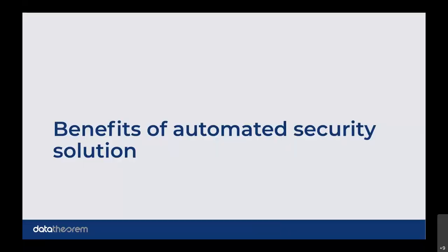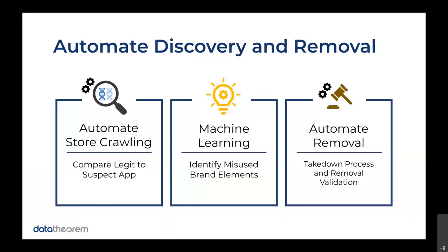This is the last portion of the PowerPoint before I get into the platform. The benefits of automated security: automate the store crawling — we will crawl all the stores every day to see if your applications are there. Once they are removed, we keep an audit history of it, and if we see it come back to the app store, we'll notify you or create an alert. Machine learning helps identify misused brand elements. And then automate removal — that takedown process where you can request removal on any of those applications that should not be in those third-party app stores. We can automate that for you.